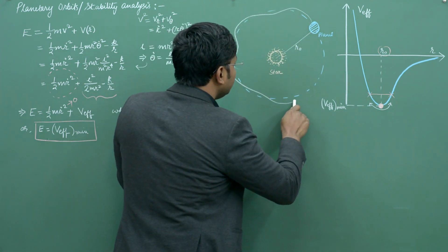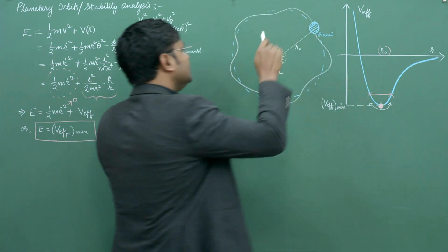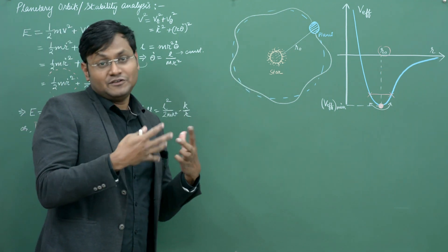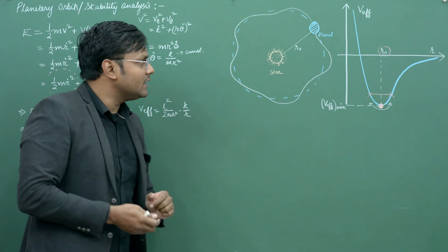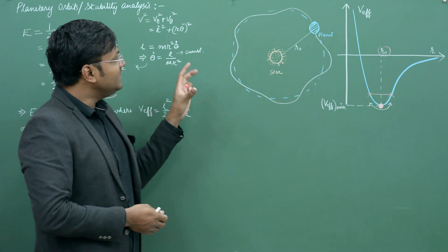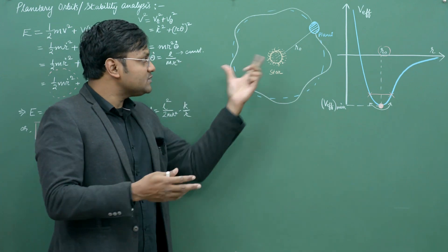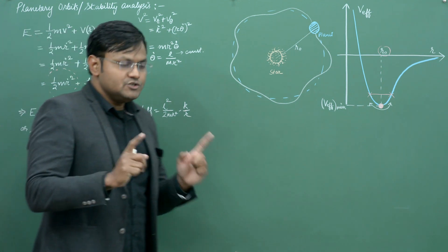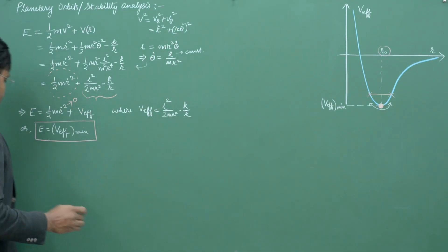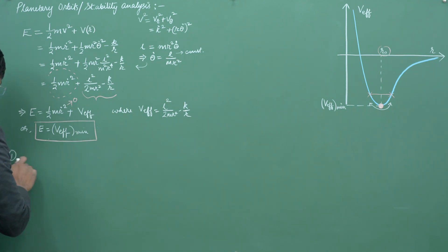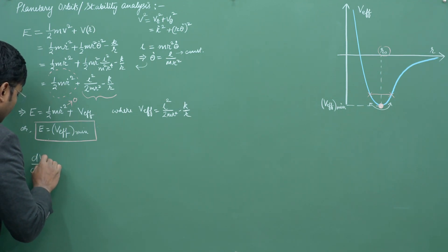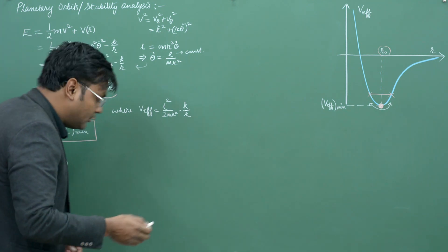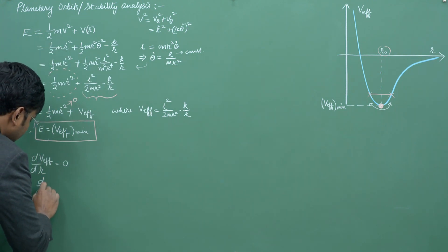To show this mathematically, I will first take the derivative of V_eff and set it to zero to find r₀ — the radius at which the minimum of the effective potential lies — and then compute the second-order derivative to determine the frequency and time period of the oscillations that arise if we perturb the system.